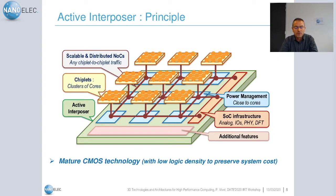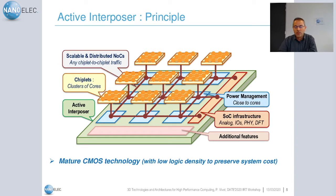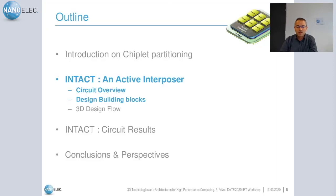To address this, we introduce the active interposer. The idea is: suppose you have a massive number of chiplets composed of clusters of cores — they could be heterogeneous. We 3D stack them face-to-face onto an active interposer, which is a large structure containing CMOS circuits to bridge all these chiplets together. We integrate scalable distributed networks-on-chip allowing any chiplet-to-chiplet traffic, power management close to the cores below each chiplet, and also analog and DFT infrastructure. Mature CMOS technology is used to preserve logic density and system cost.